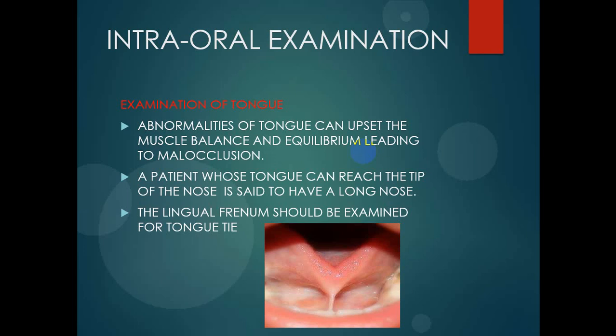Coming to examination of the tongue: abnormalities of the tongue can upset the muscle equilibrium, which can lead to malocclusion. If any abnormality in the tongue affects the muscles or muscle balance, that imbalance can cause malocclusion. It is said that if the patient's tongue reaches the nose, it is said to be a large tongue. The lingual frenum should also be examined for tongue tie — details about lingual frenum will come in the next consecutive slides.